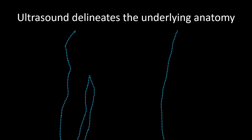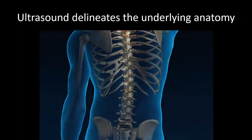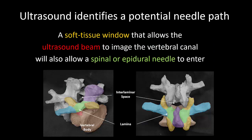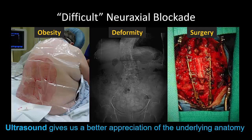First, some general principles. Remember that the purpose of ultrasound imaging is to better delineate the underlying anatomy. With this, we identify a potential soft tissue window for needle insertion into the epidural or intrathecal space. This is particularly important where the anatomy cannot be discerned or where it has become distorted.